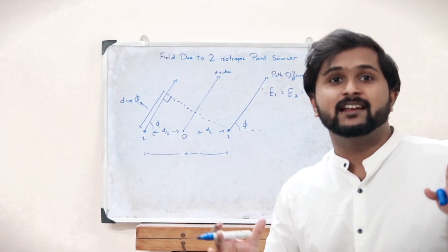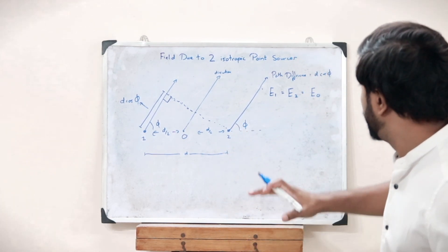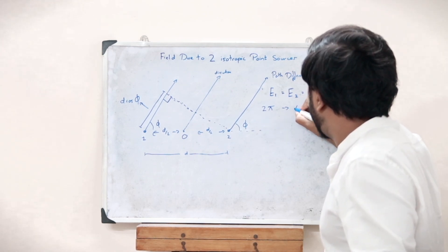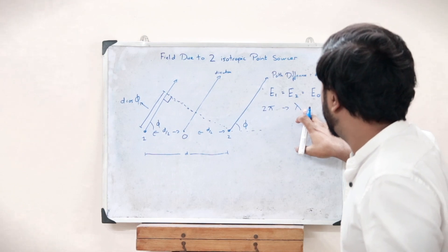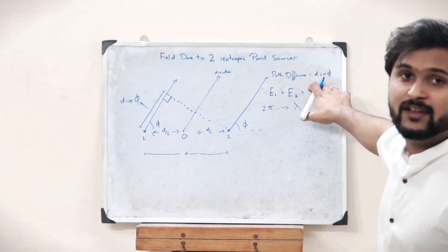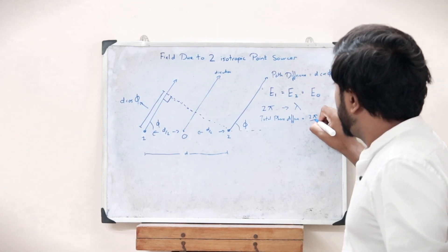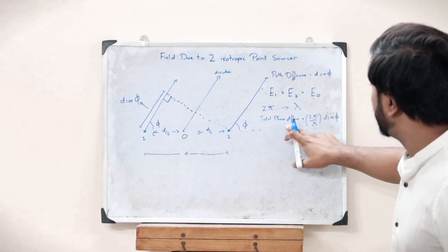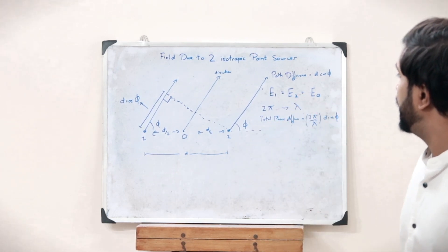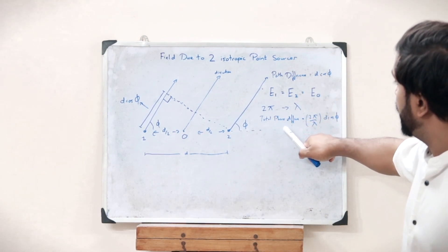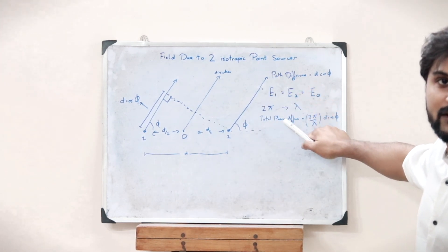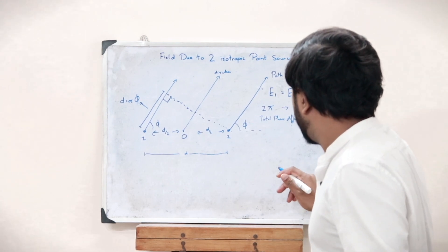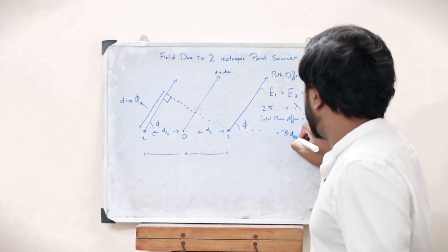Now we have to find the phase difference. The phase difference can be found using the path difference. If 2π is the phase difference for a wavelength λ, then the phase difference for a path difference of d cos phi is given as (2π/λ) · d cos phi. So the total phase difference is 2π/λ · d cos phi. Let us take 2π/λ as the constant beta, so the total phase difference is β d cos phi.